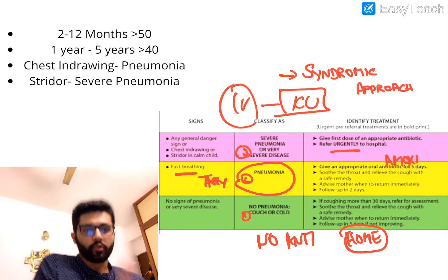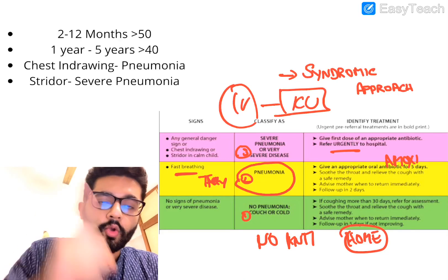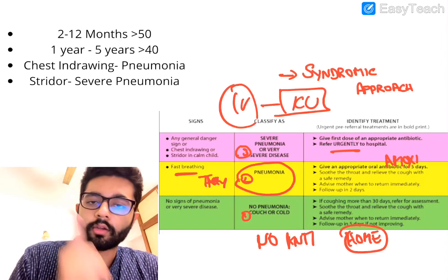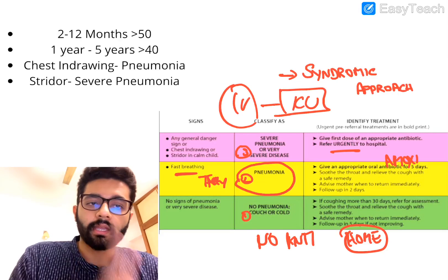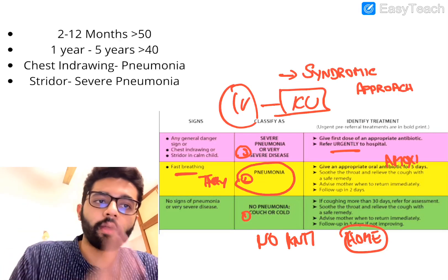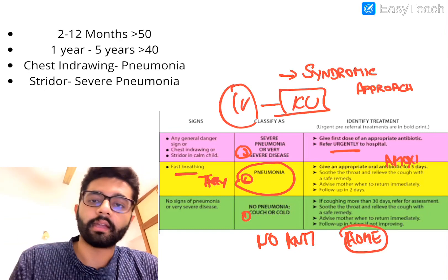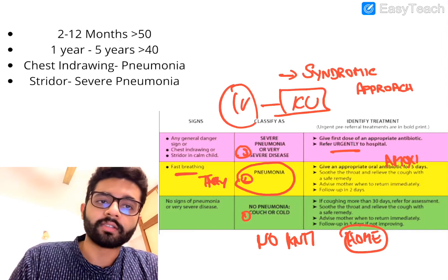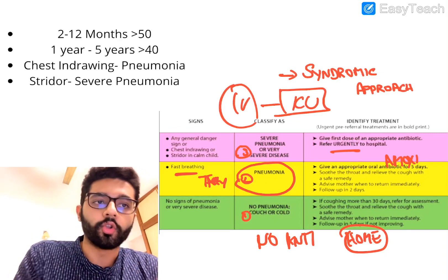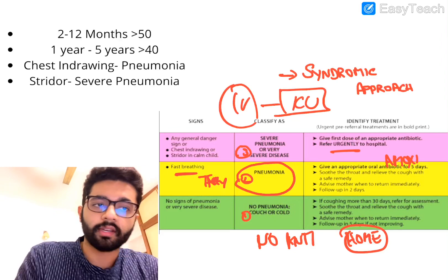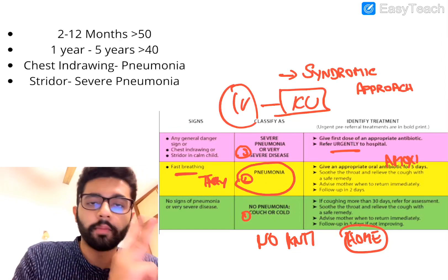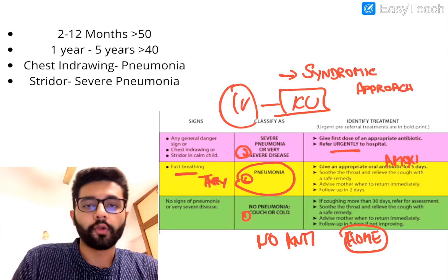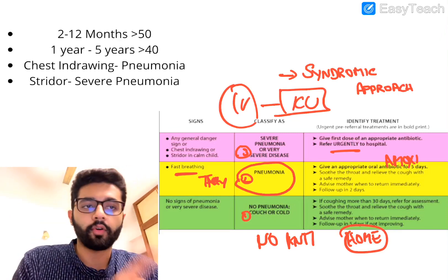To review the three categories: no pneumonia — upper respiratory symptoms like cough and cold, no tachypnea, no chest drawing, no stridor; home-based care. Pneumonia — tachypnea with cough, LRTI; oral amoxicillin for five days, review after two days. Severe pneumonia — any danger signs or stridor; immediate IV antibiotics and ICU admission or referral to higher center.